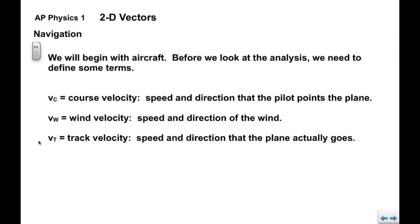And we have V sub T, which is track velocity. This is the speed and direction that the plane actually goes. Most of the confusion comes about between these two. Think of V sub T as what the plane actually does.